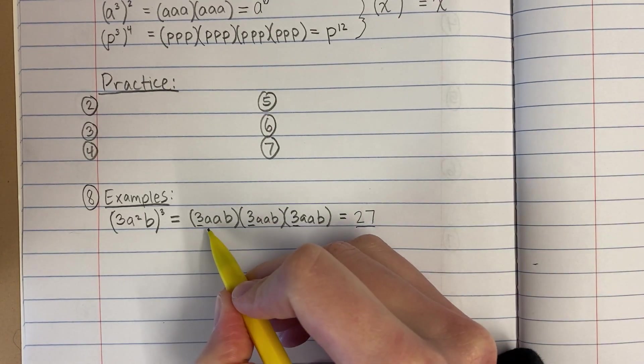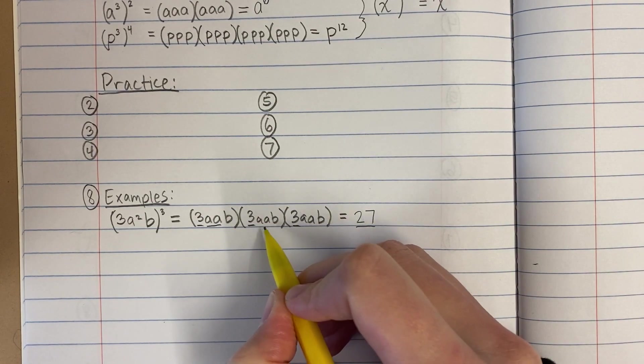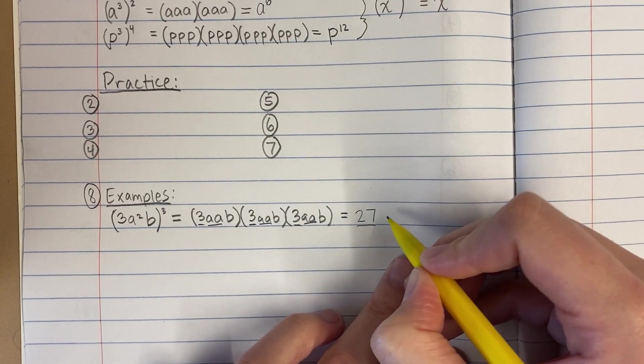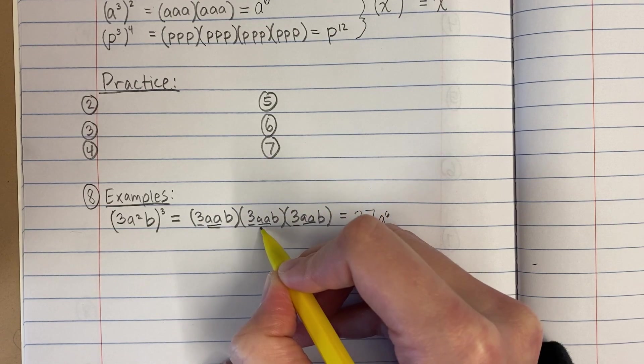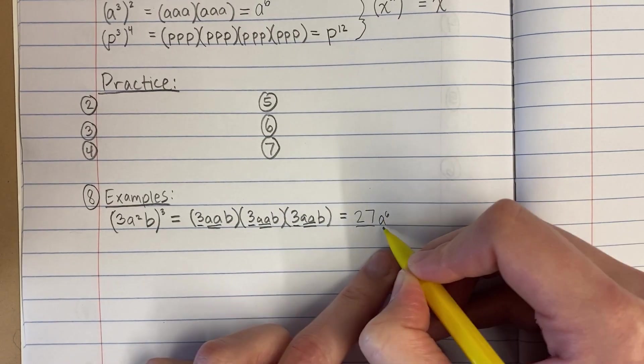Okay, now I'm going to count my a's. I have 1, 2, 3, 4, 5, 6 a's. Okay, and look, I'm just going to do this just so you can see it nice and clear, right? There's 6 a's.